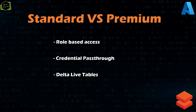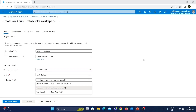The next difference is Delta Live Tables — a newly introduced feature in Azure Databricks for creating complete ETL pipelines using Databricks itself. This feature requires a Premium workspace. Additionally, advanced security features like virtual networks and private networks are only configurable using the Premium workspace. This is used when you want Databricks to be accessed only via a certain private network. In terms of cost, Premium is more expensive than Standard but offers better performance, along with more support options from Microsoft.